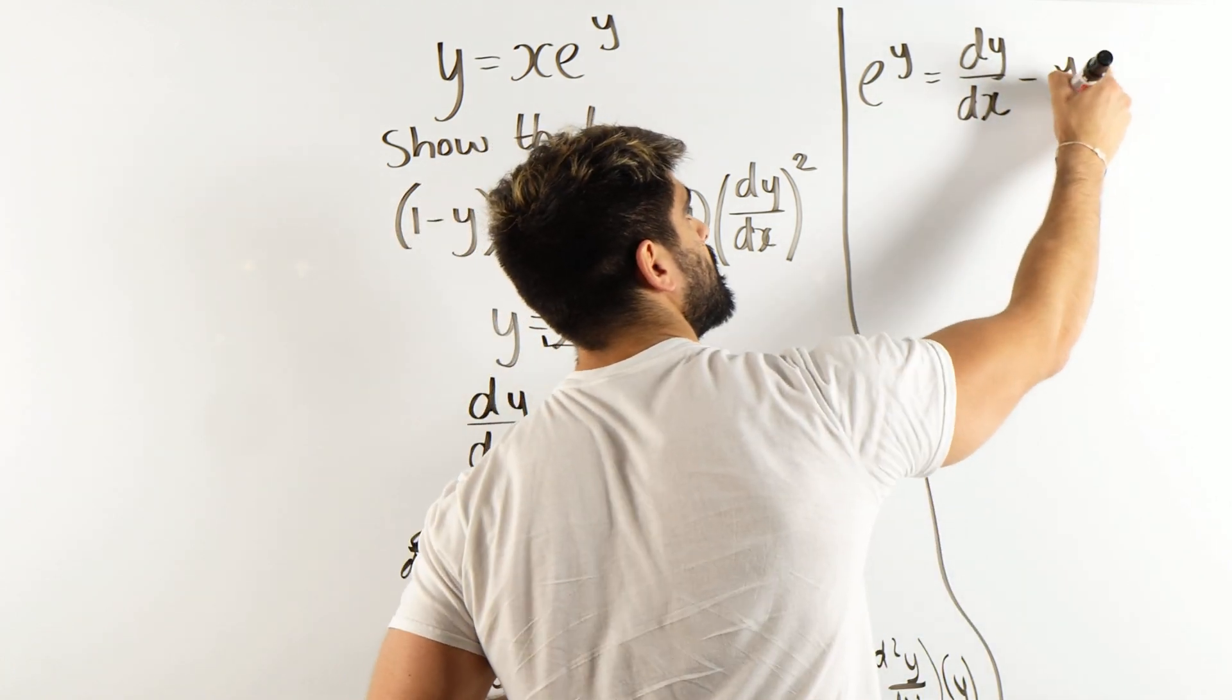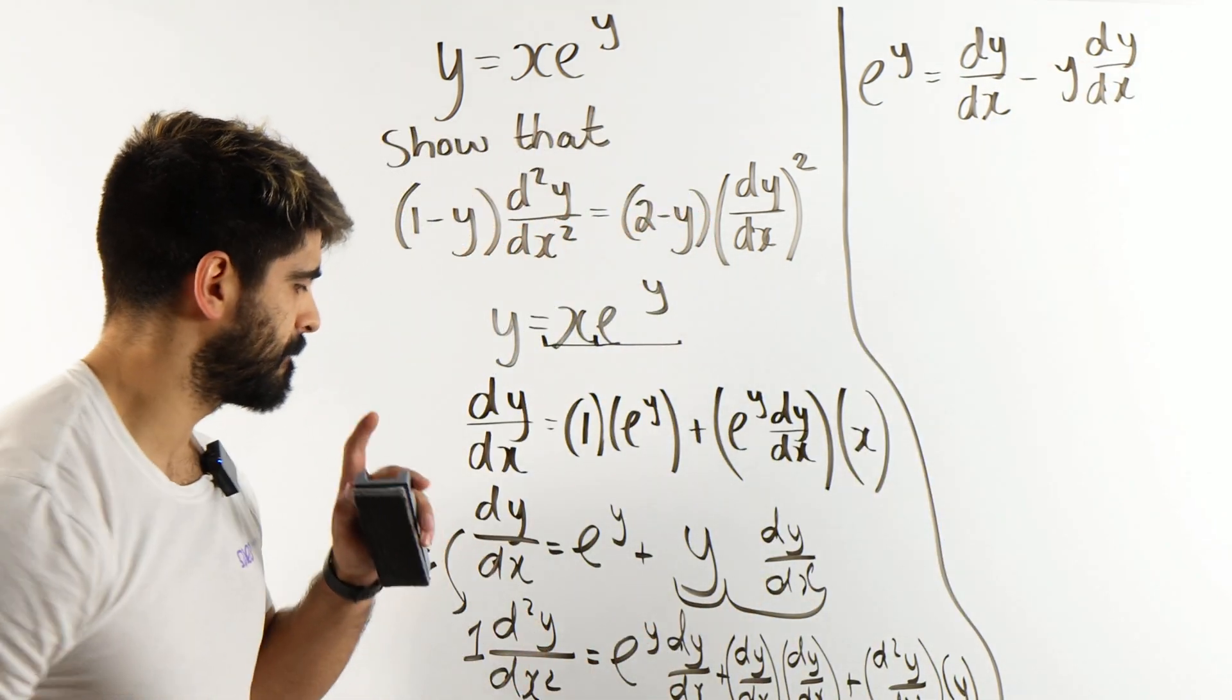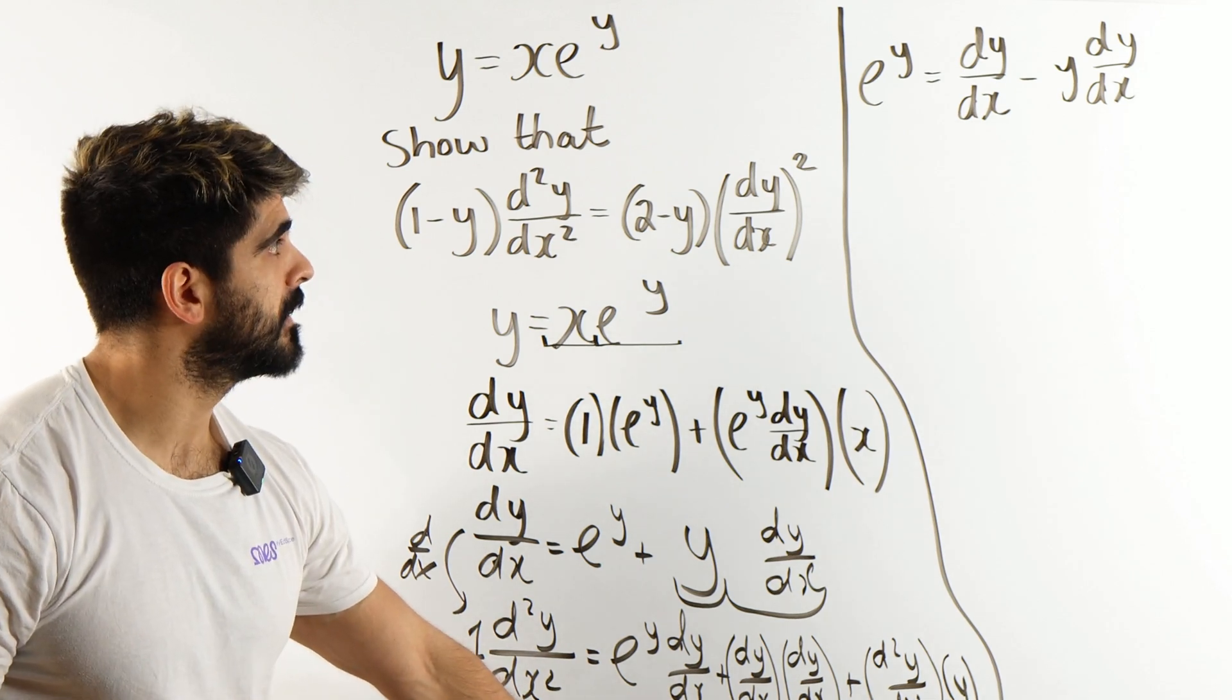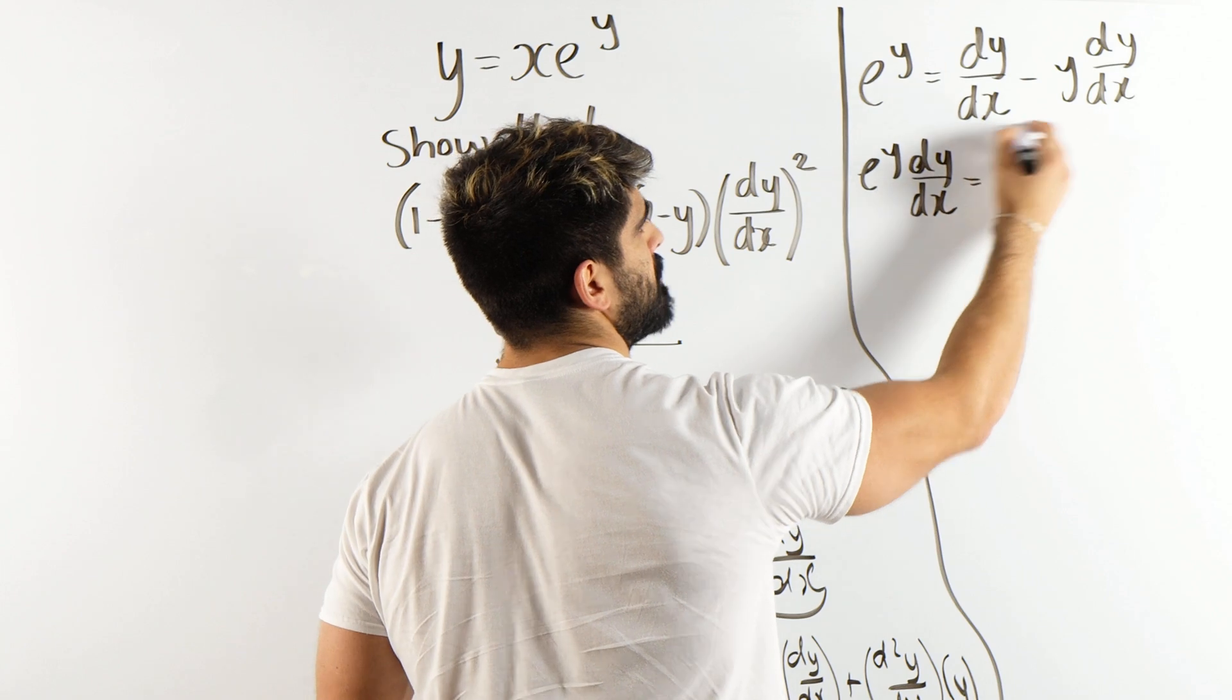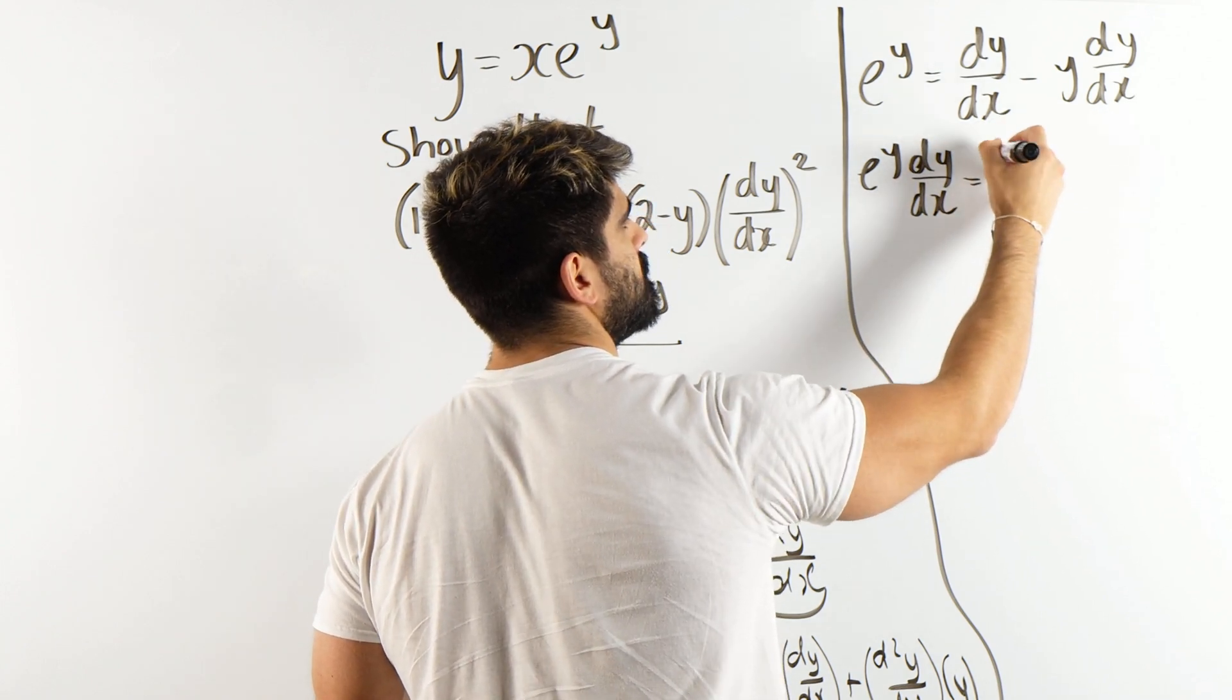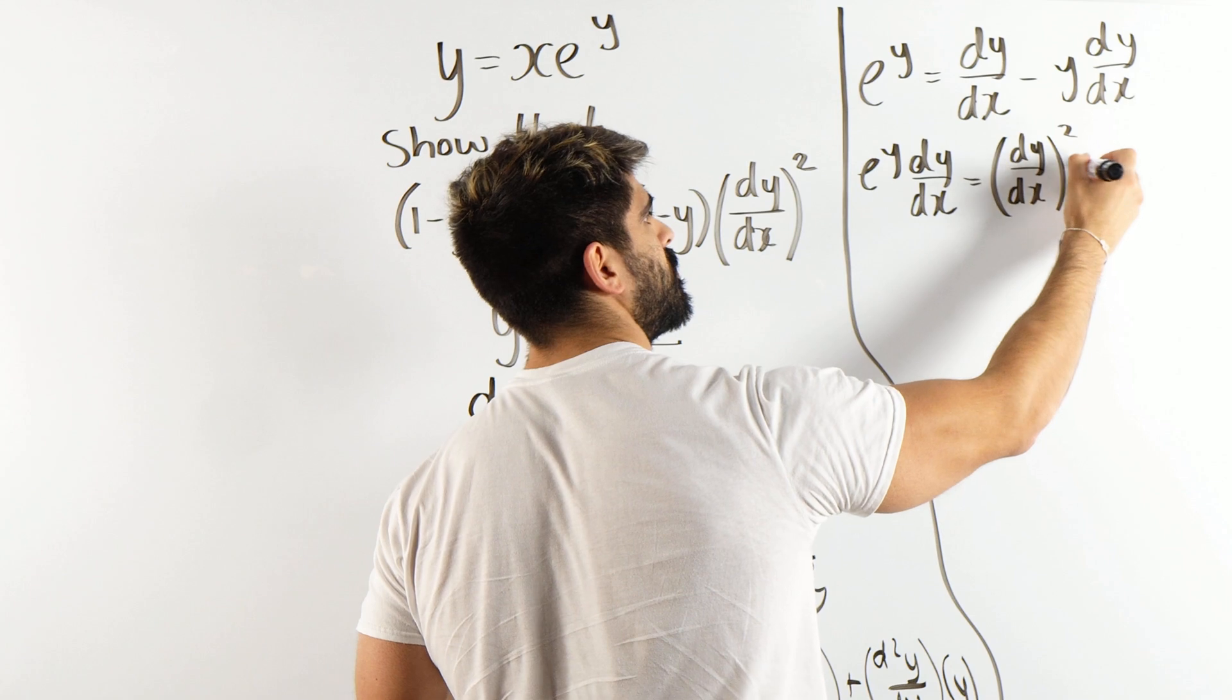All right, let's plug in here. Forget about this for a second, this is more important. So e to the y dy/dx is going to be multiplied through by dy/dx, so I'll get this squared. Okay, that's good, it's looking good.